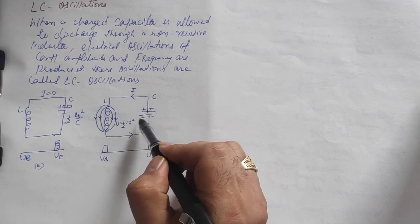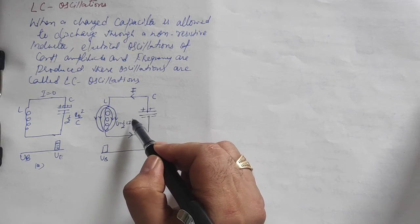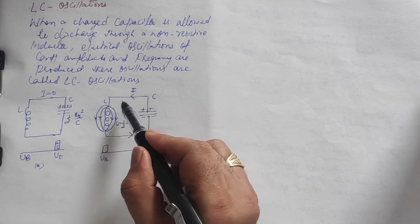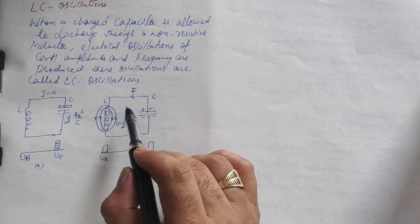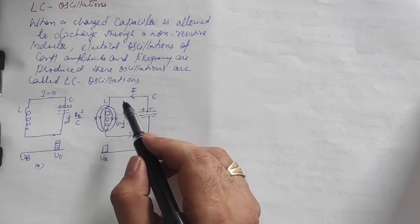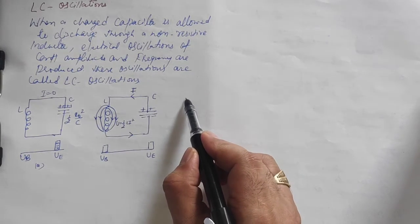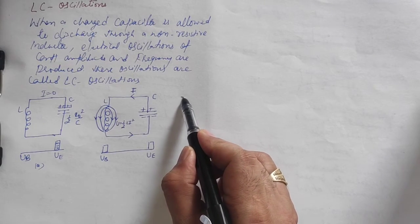After the capacitor completely discharges, the potential becomes zero. Current reaches its maximum value I₀. Let me explain this through another diagram.